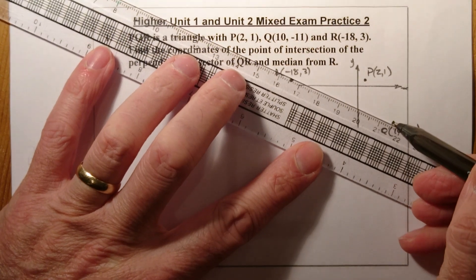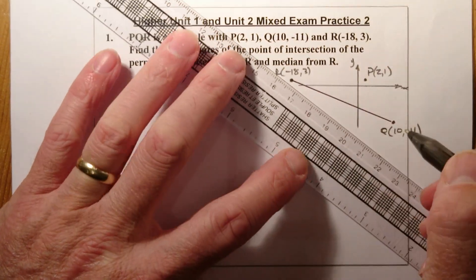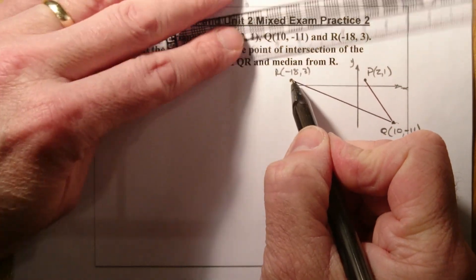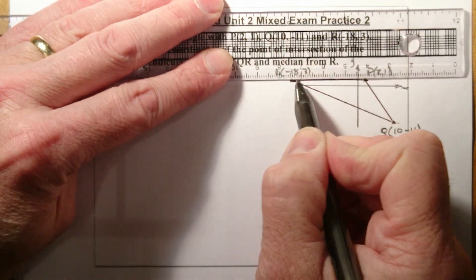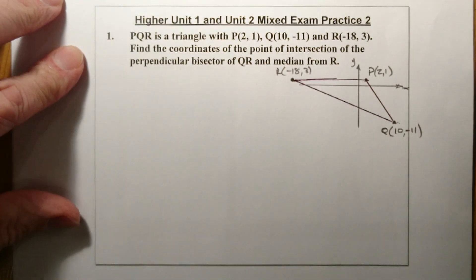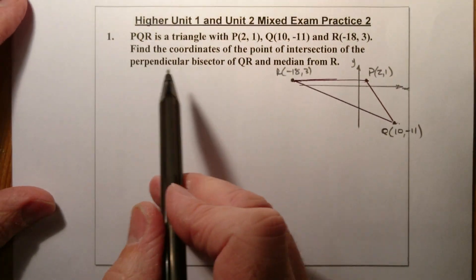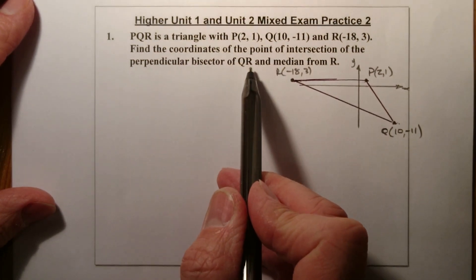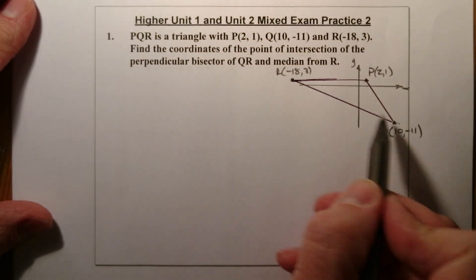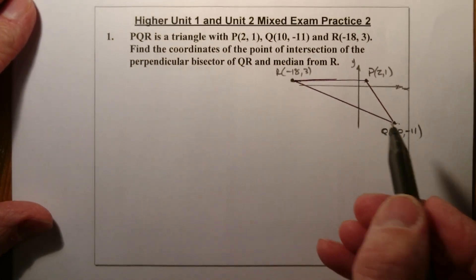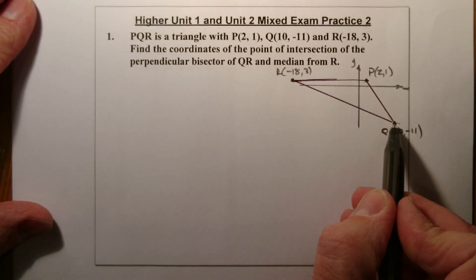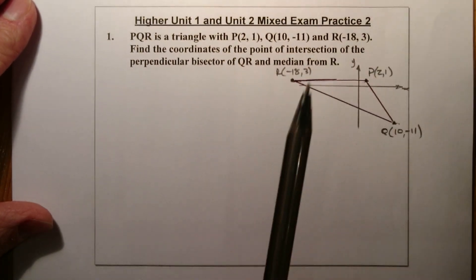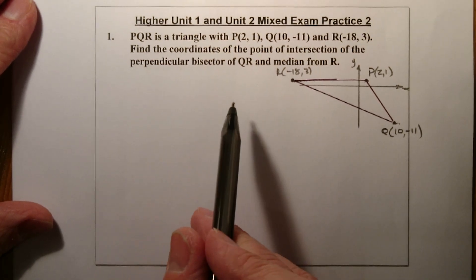So that's my triangle in place. What I've got to do is find the coordinates of the point of intersection of the perpendicular bisector of QR. So I'm going to find the midpoint of QR, find the gradient of QR, take the perpendicular gradient, and that should allow me to find the equation of the perpendicular bisector.